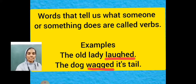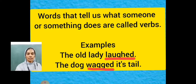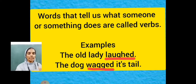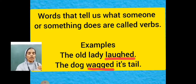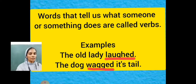Dear students, please look at these examples. The old lady laughed. Which is the subject here? The old lady. Which is the verb here? Laughed. Here, the verb describes what the subject is doing. What did the old lady do? She laughed. So the verb here is laughed.